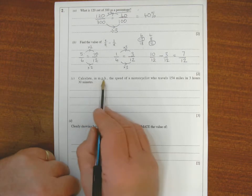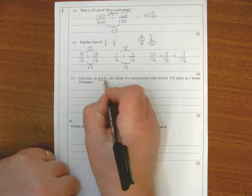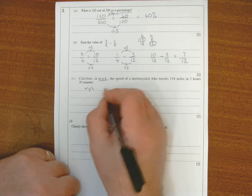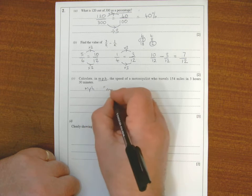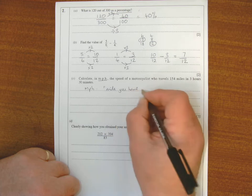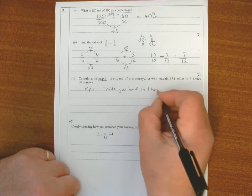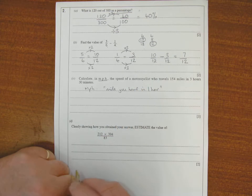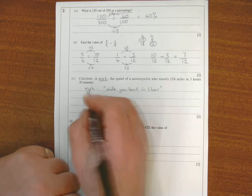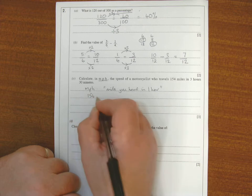Calculating miles per hour. Now what that means is how many mph, which is the same as saying how many miles do you travel in one hour. That's what speed is - how far do you travel in one hour. Well here, we travel 154 miles.